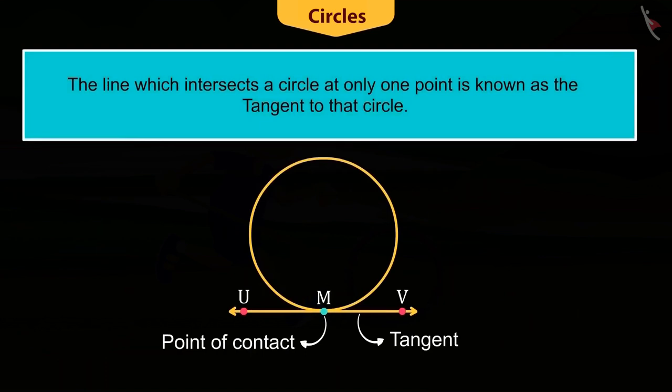Hence, we can say that the line which intersects the circle at only one point is known as the tangent to a circle.